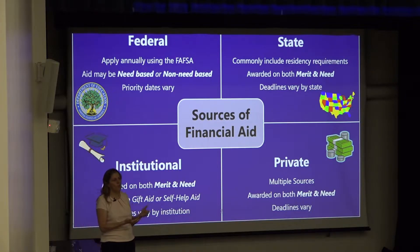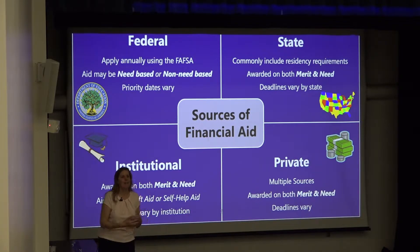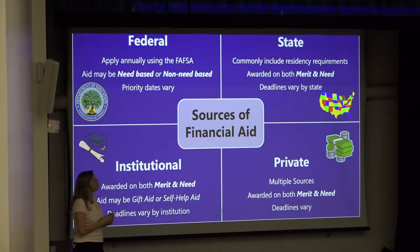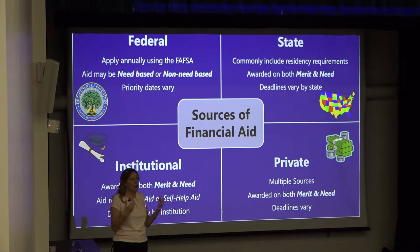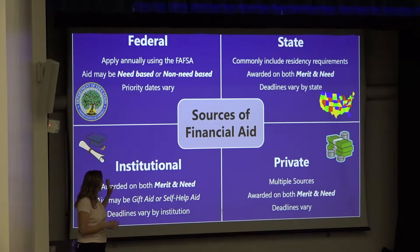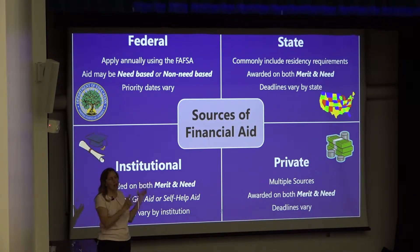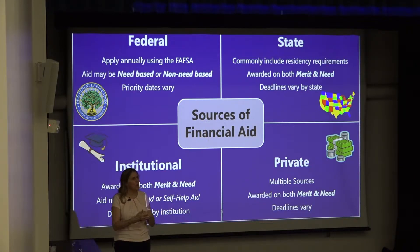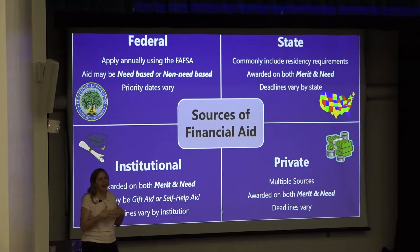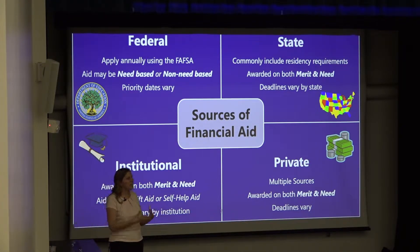You would need to complete the FAFSA each year that you want to be considered for federal aid — it's not something you do just one time. There are both need-based and non-need-based types of aid. Federal aid looks mostly at need compared to other sources, which have a combination of merit. Merit looks at your ACT or SAT scores, high school GPA, and involvement activities — things beyond just financial resources.